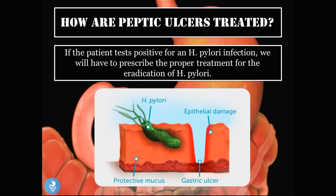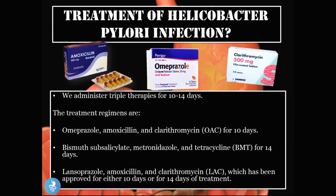So how are peptic ulcers treated? The main cause of peptic ulcers is an H. pylori infection, so if the patient tests positive we must prescribe proper treatment to eradicate H. pylori first, and that is how we treat the ulcer. For H. pylori treatment we use triple therapy, usually prescribed for 10 to 14 days, and there are three treatment regimens to choose from.